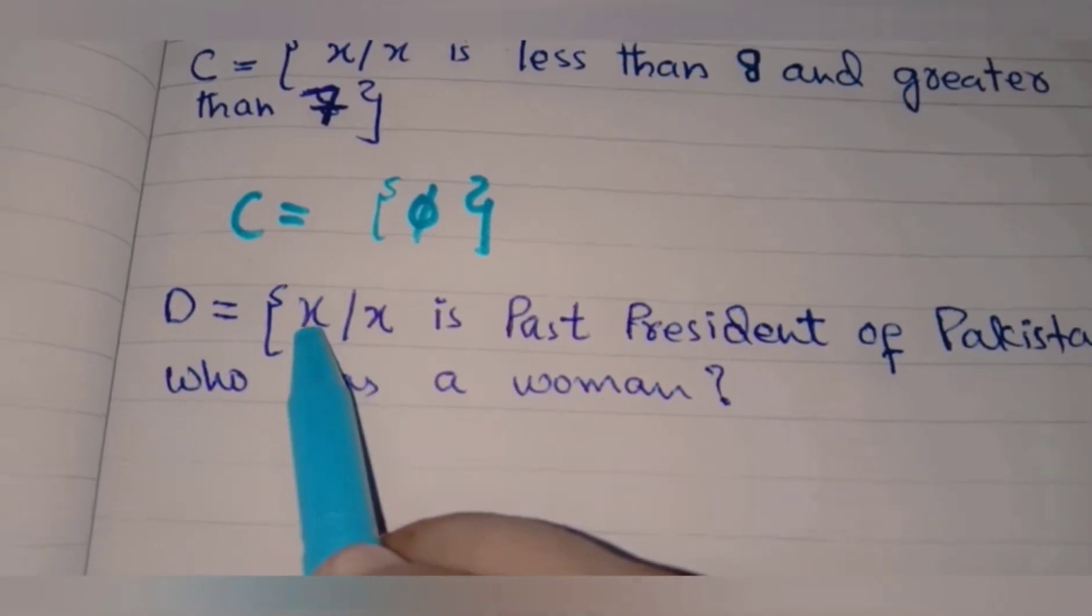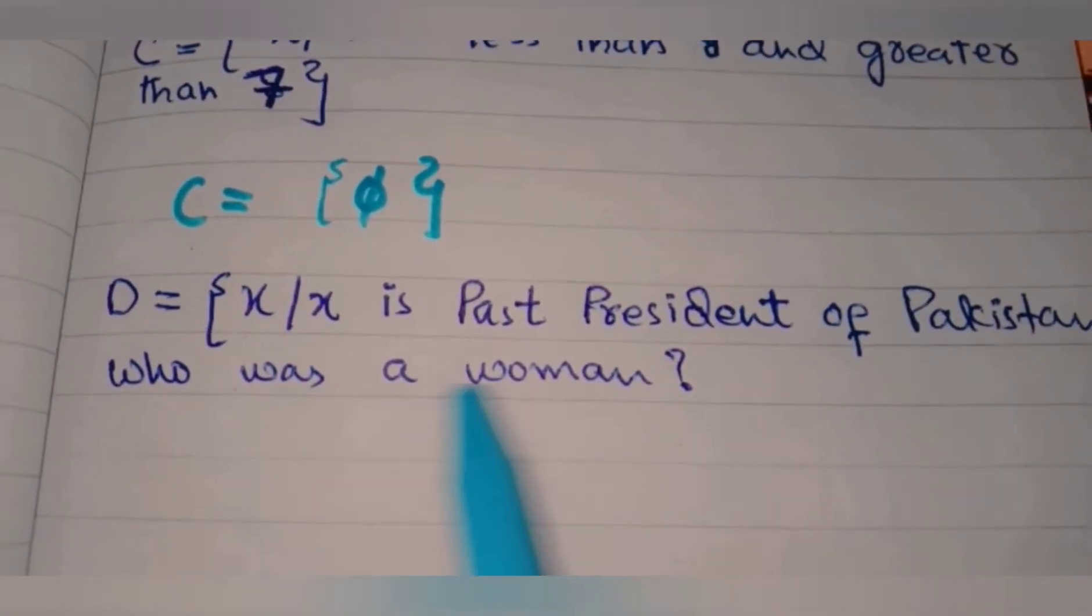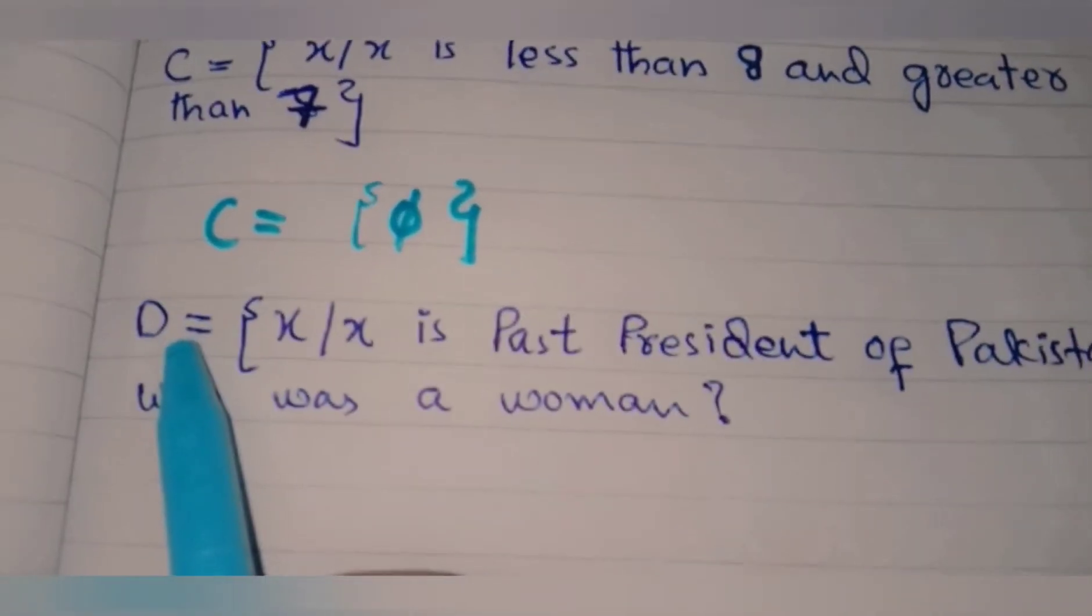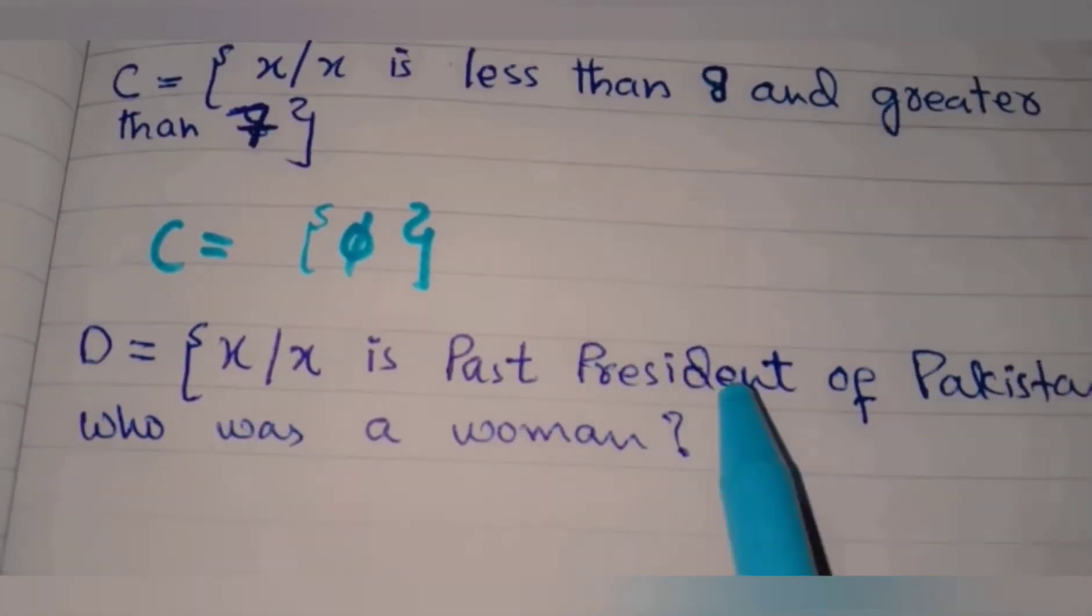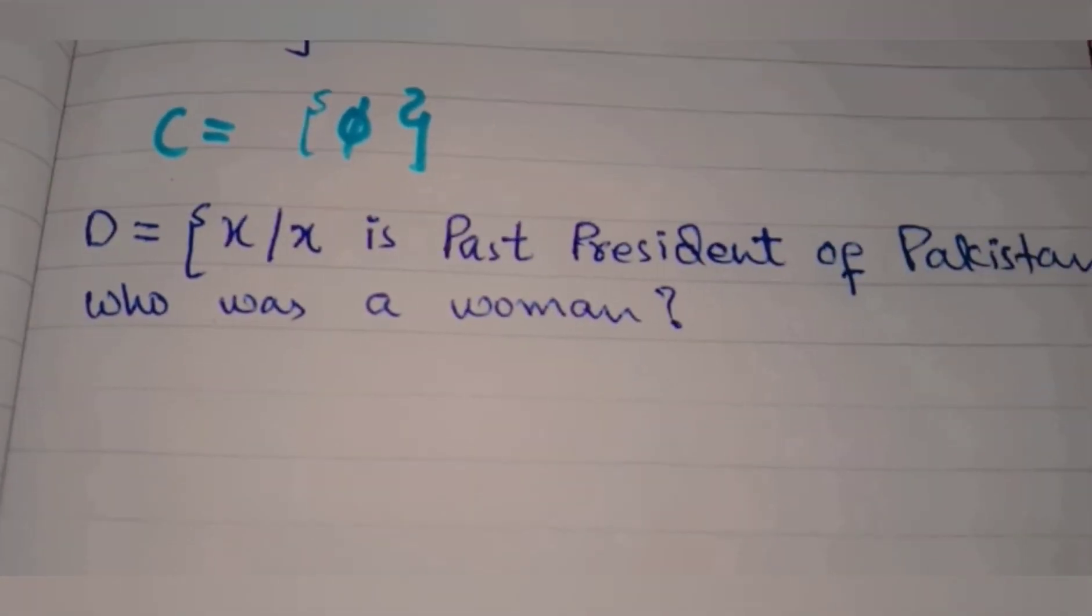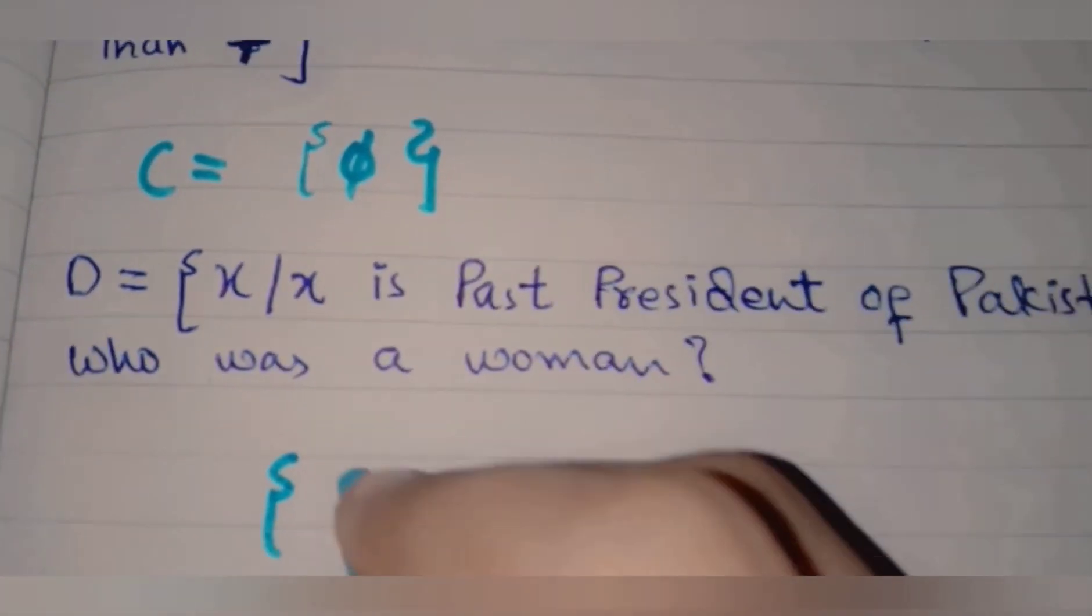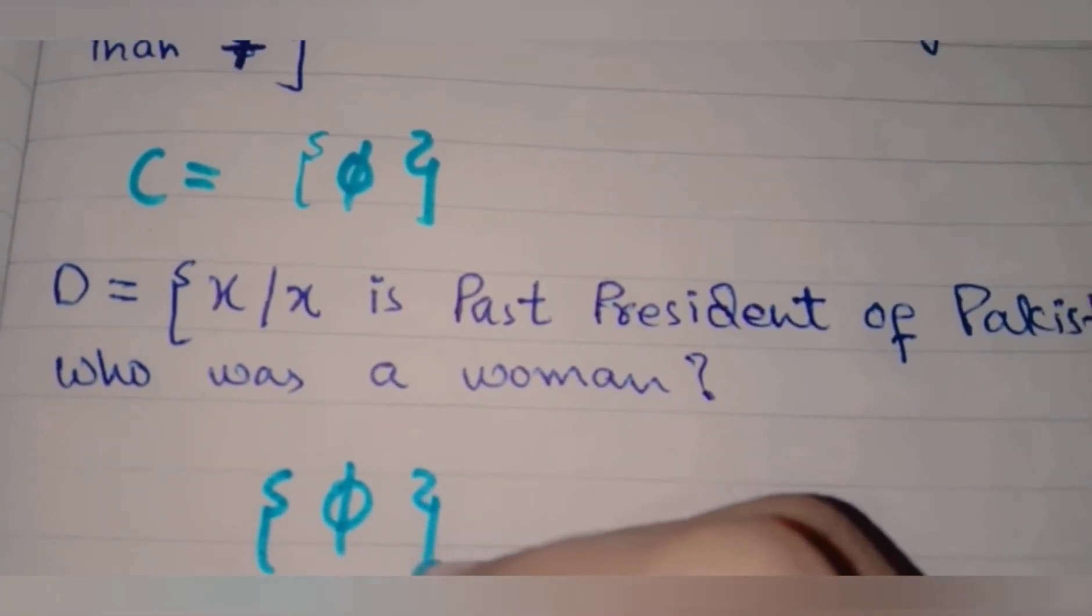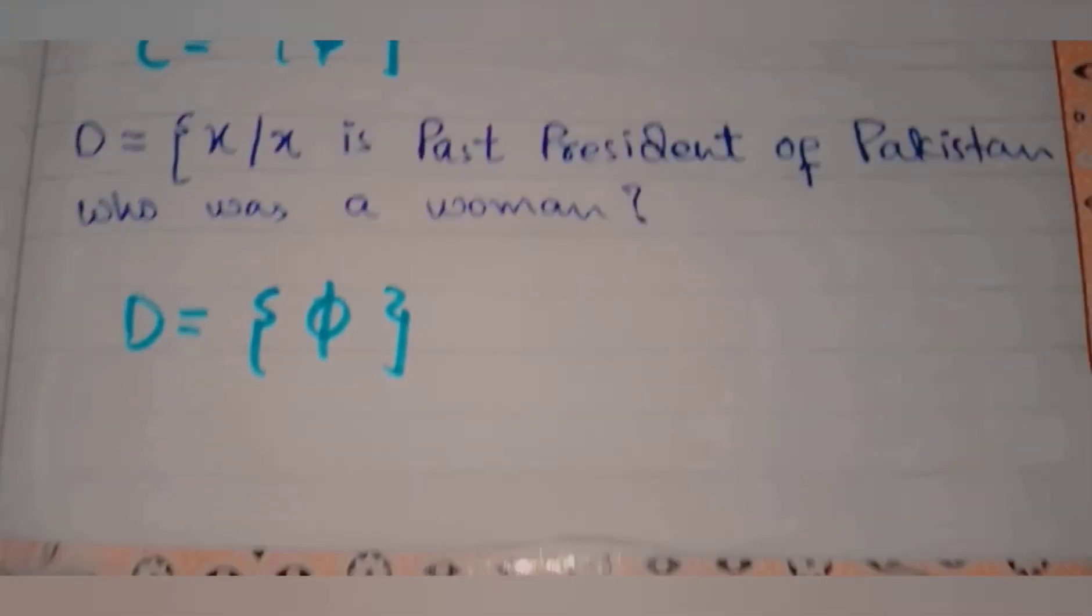Part D: D equals the set {x/x is a past president of Pakistan who was a woman}. Since there has never been a woman president of Pakistan, this is also a null set. So the D part is also a null set.